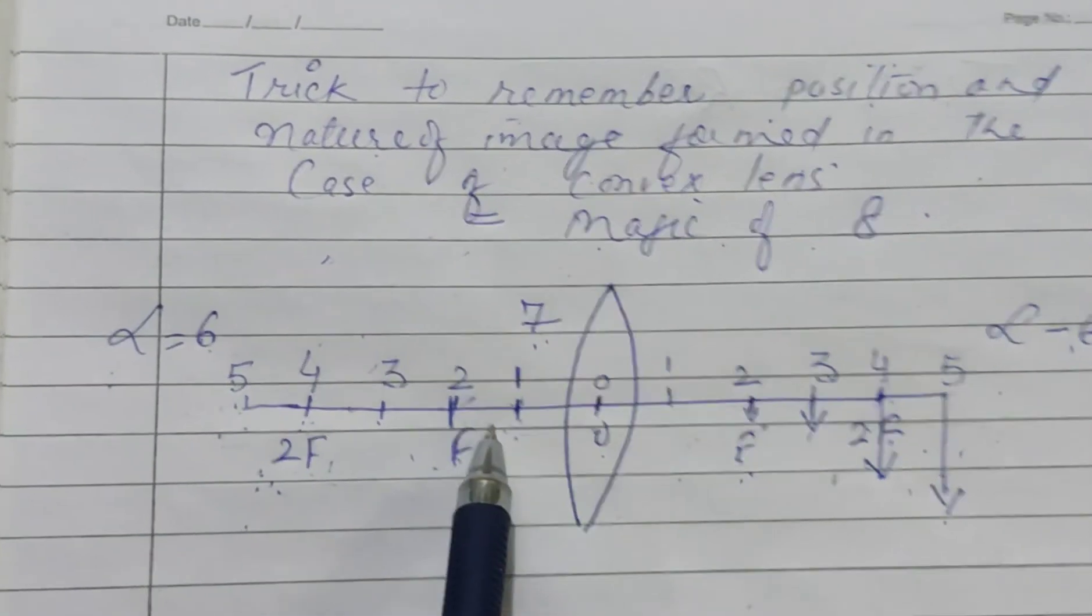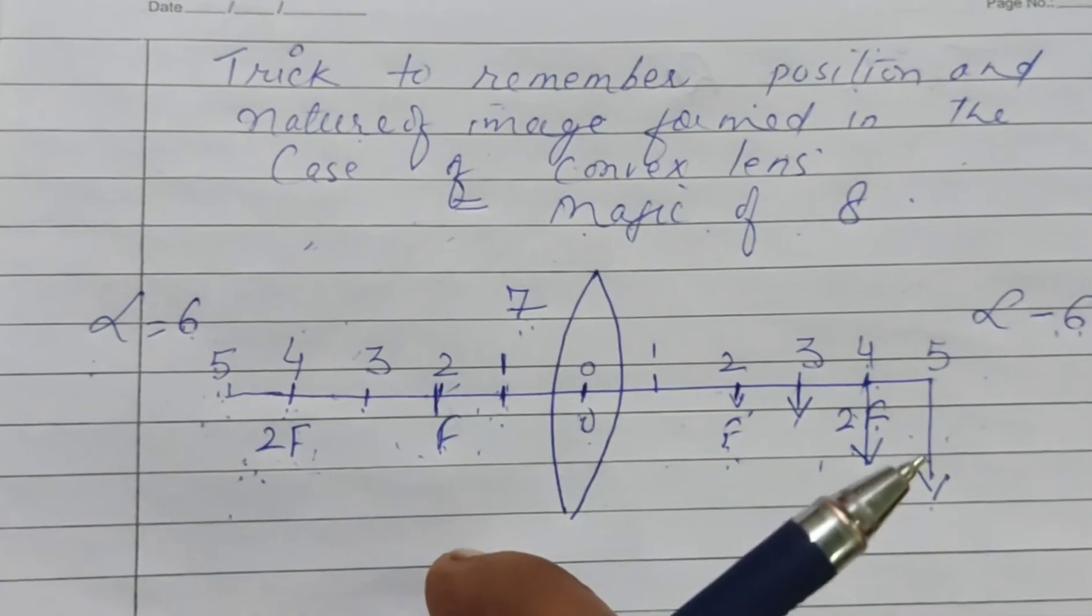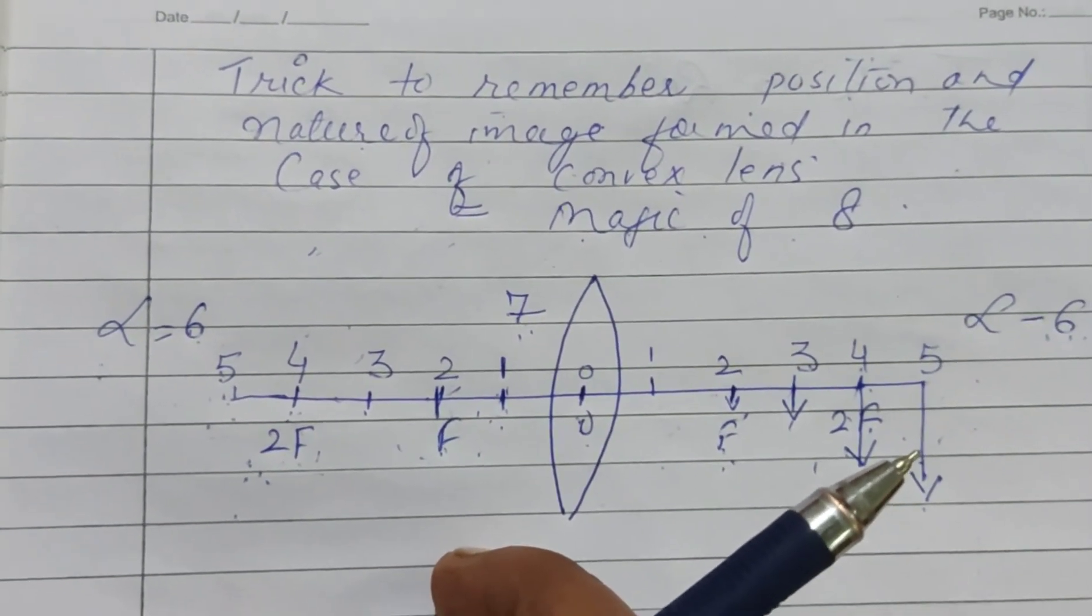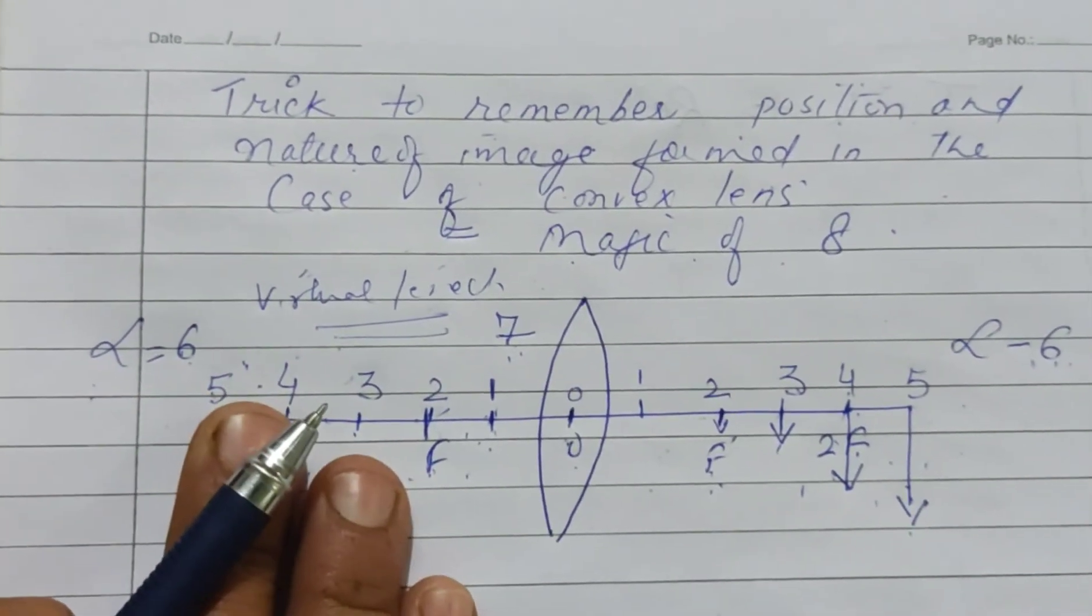Since on this side all images were real and inverted, here the nature will also change. The image which will form on this side will be virtual, erect, and magnified.